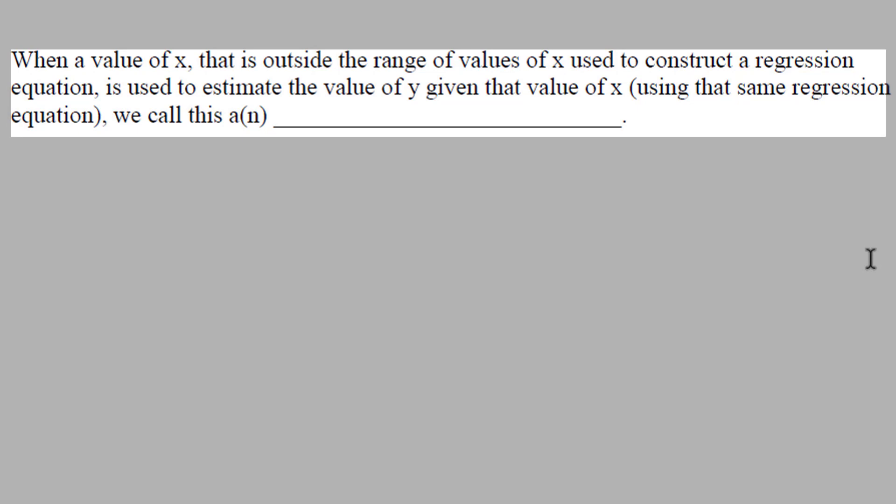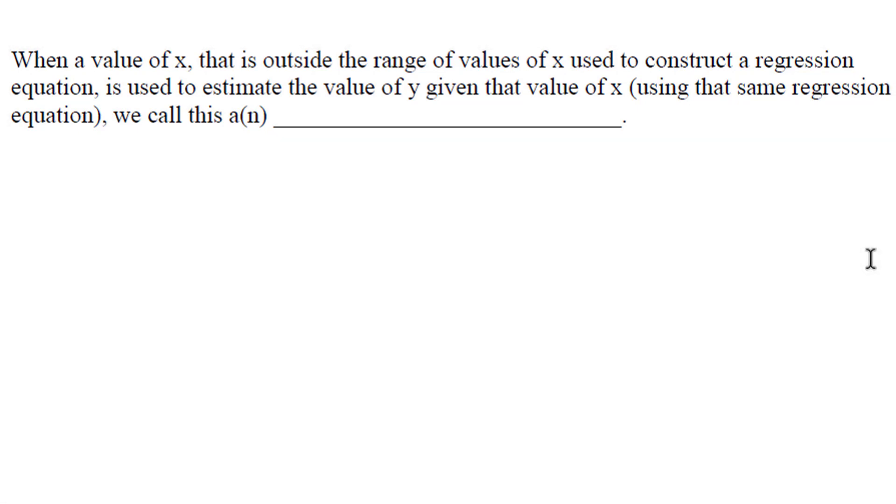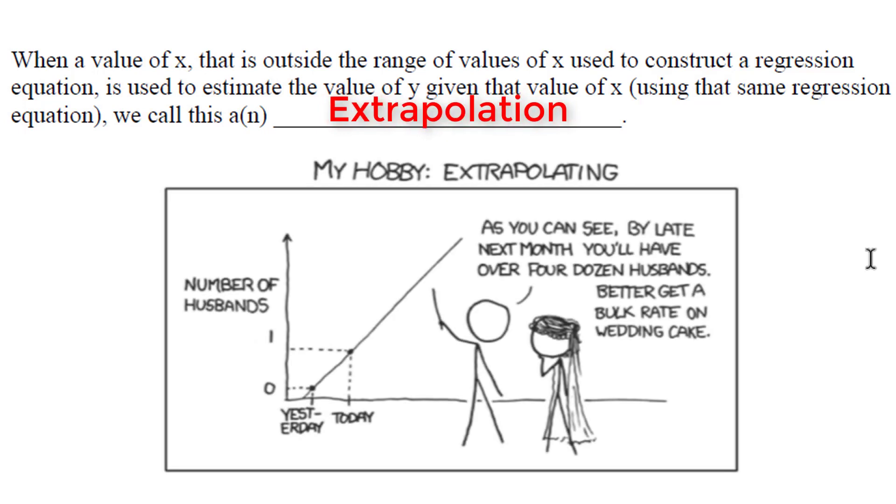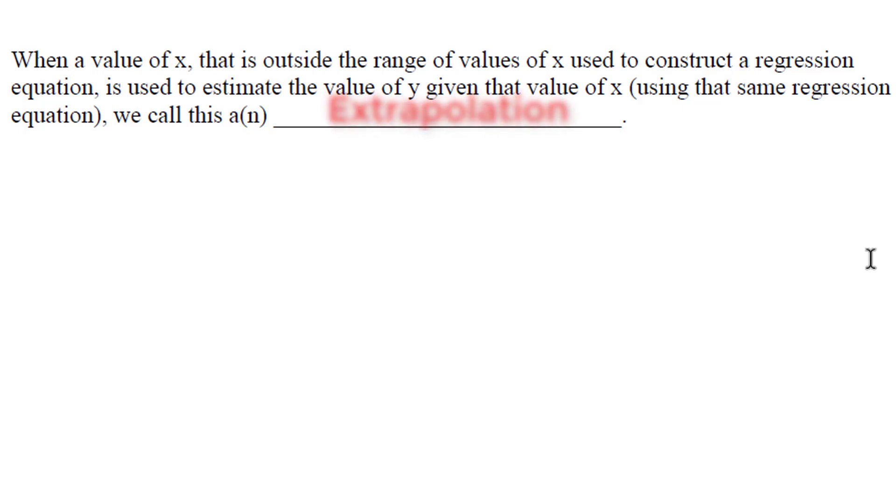When we use an x value that is outside of the range of x's we used in the regression equation, what are we doing? Well, a value outside of the range of x's plugged into the equation would be an extrapolation of the regression equation. We are extrapolating. Extrapolating means using an x that is outside of the range of the x's used in the equation, and now the equation is giving us something unreliable, because the equation was built around a certain range of x's, and we are outside that range.